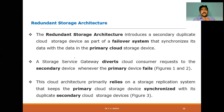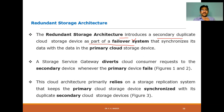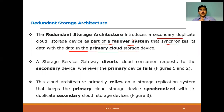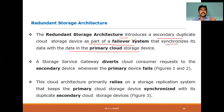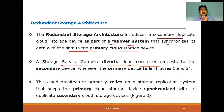The Redundant Storage Architecture maintains a secondary duplicate cloud storage device as part of the failover system. Whenever the primary system fails, the task automatically resumes from where it stopped. To achieve this, the secondary storage synchronizes its data with the primary cloud storage device, so access continues from the exact point of failure.